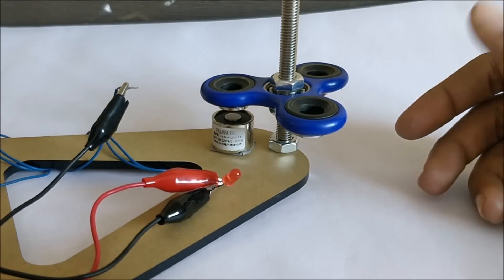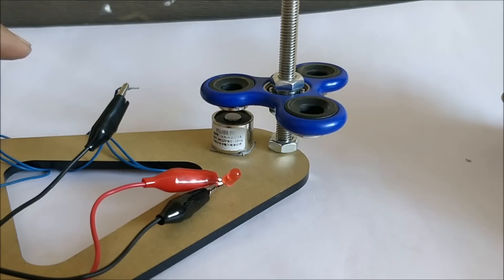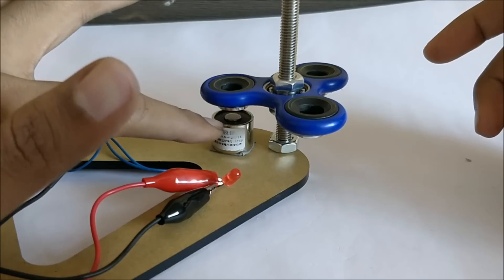A few interesting things here - we have actually reversed the principle of an electromagnet. Basically, how an electromagnet works is that we apply 12 volts across this and a current will flow through the coil inside this electromagnet.